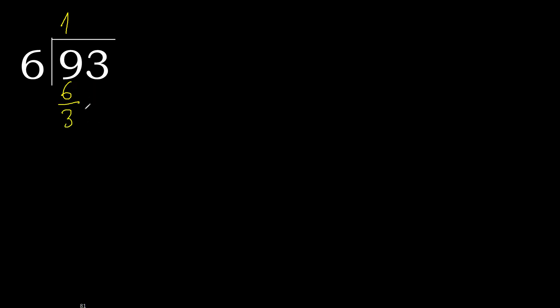Next: 33. 6 multiplied by 6 is 36 — that is greater. 6 multiplied by 5 is 30, which is not greater. So 33 minus 30 is 3.